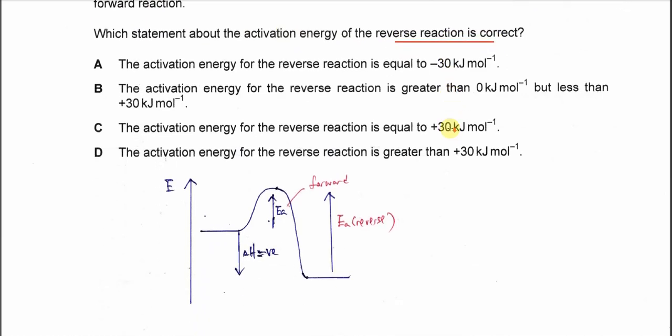It's better to explain using energy diagram. Since it's already mentioned is the exothermic reaction, we know that the energy level of the reactant is higher than the products.